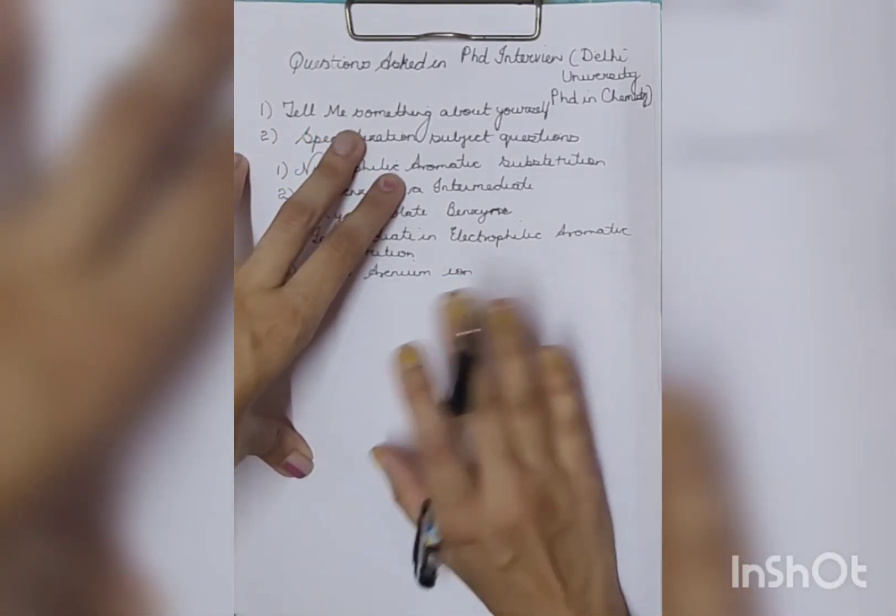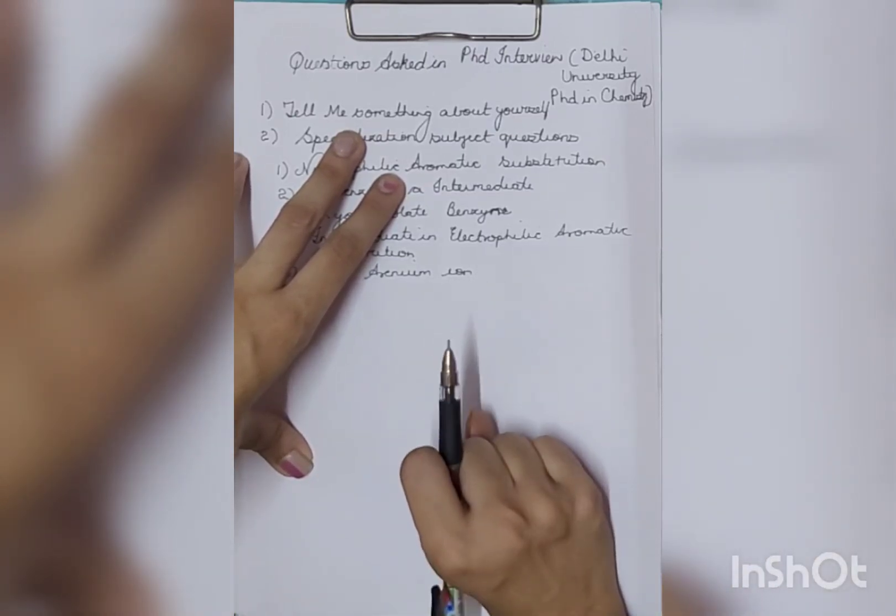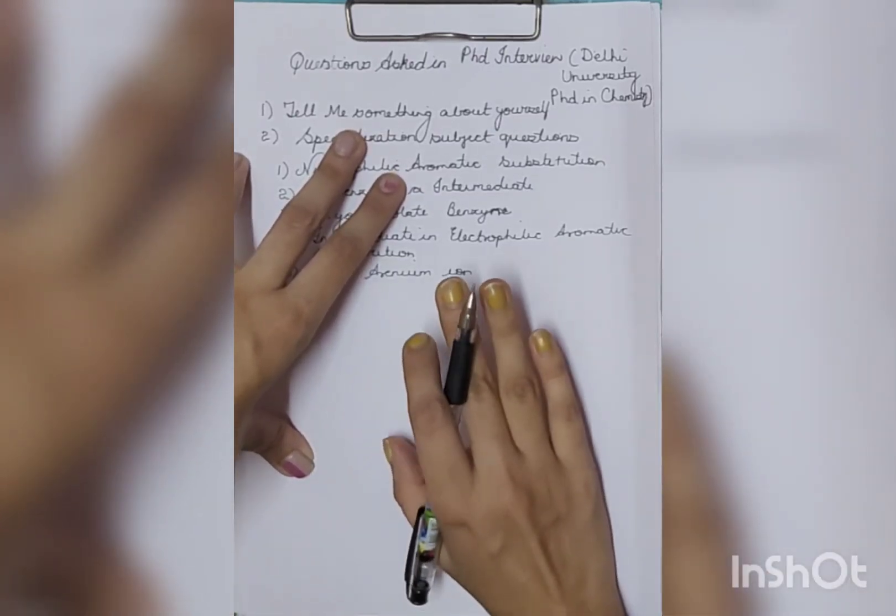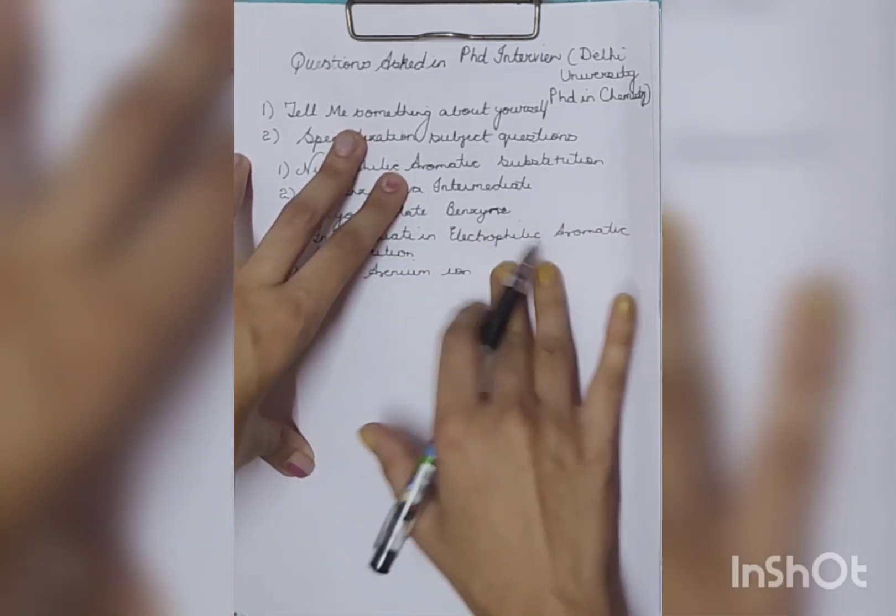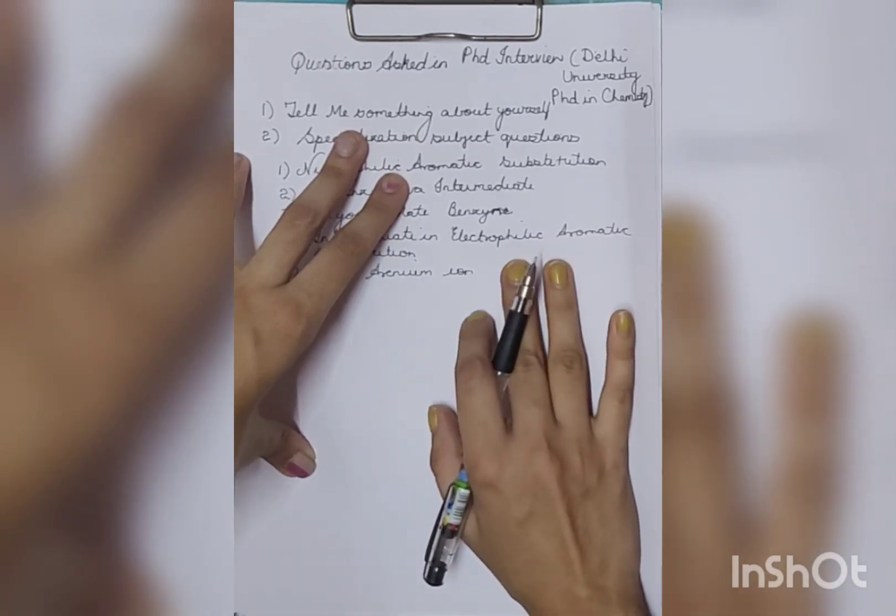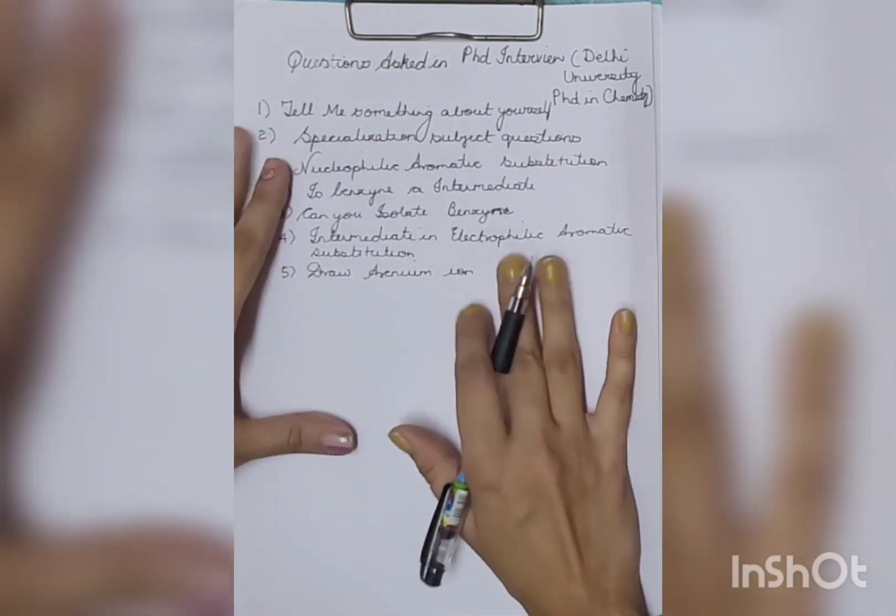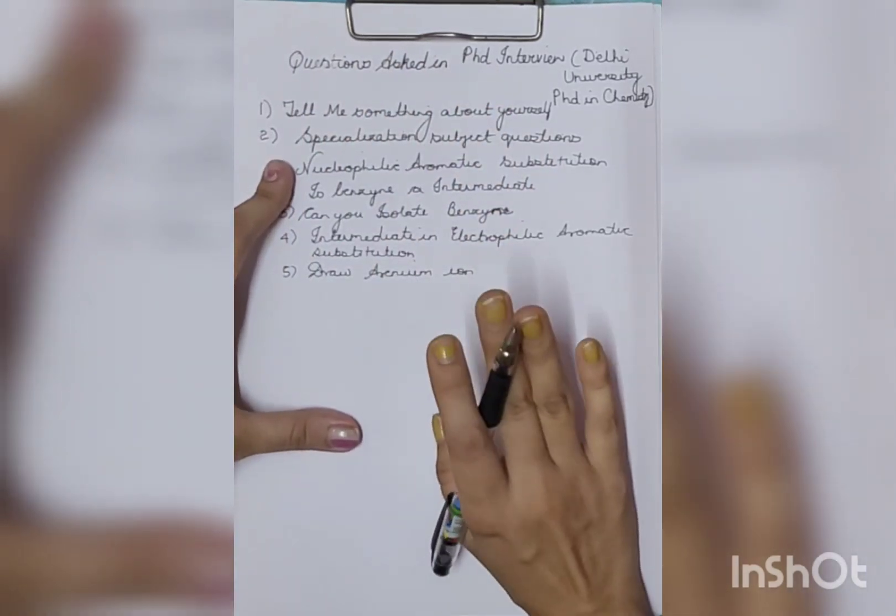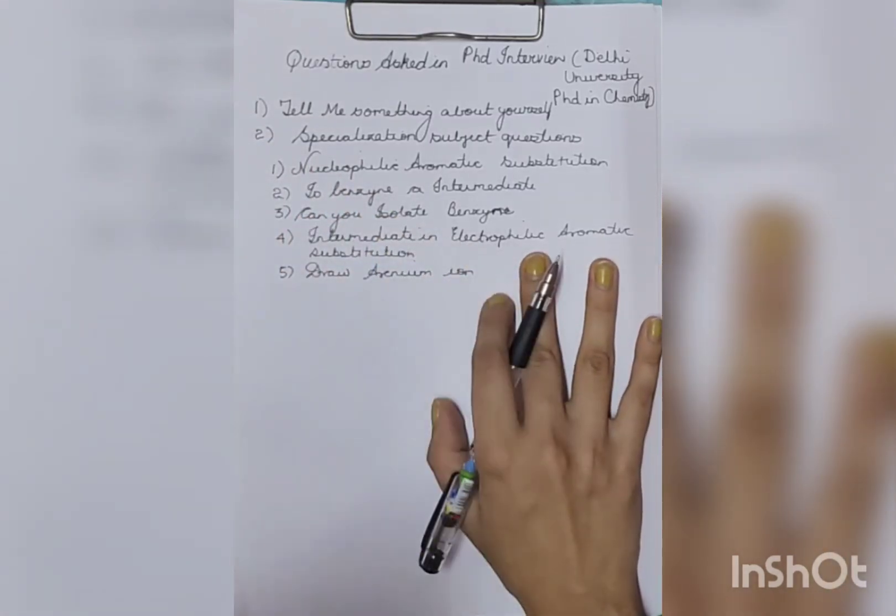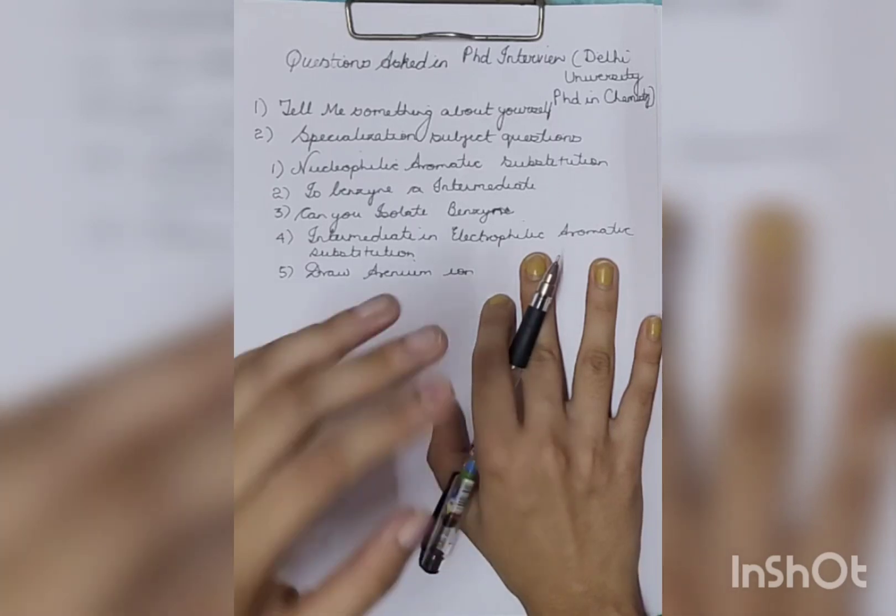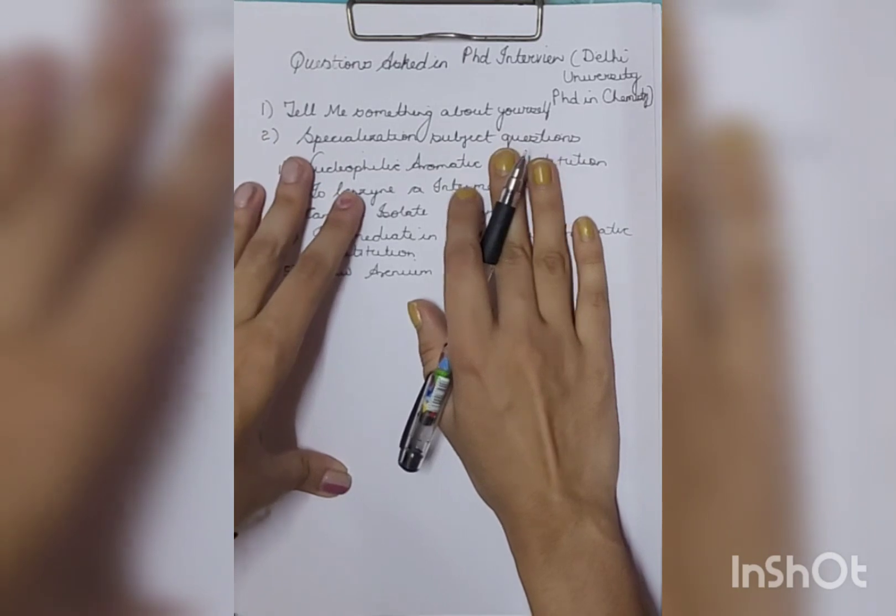First they asked me to tell them something about myself. So I said okay, this is my schooling, graduation, and all. As I am pursuing B.Ed also, I informed them about that. But yeah, if you have done B.Ed like I have just completed, then you will have to justify why you have done B.Ed. Questions can be asked - not in this DU interview but questions were asked to me about why, if you have done B.Ed, why you want to pursue PhD. So you should have an answer if you are in similar condition.